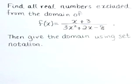Find all real numbers excluded from the domain of f(x) equals x plus 3 all over 3x squared plus 2x minus 8. Then give the domain using set notation.